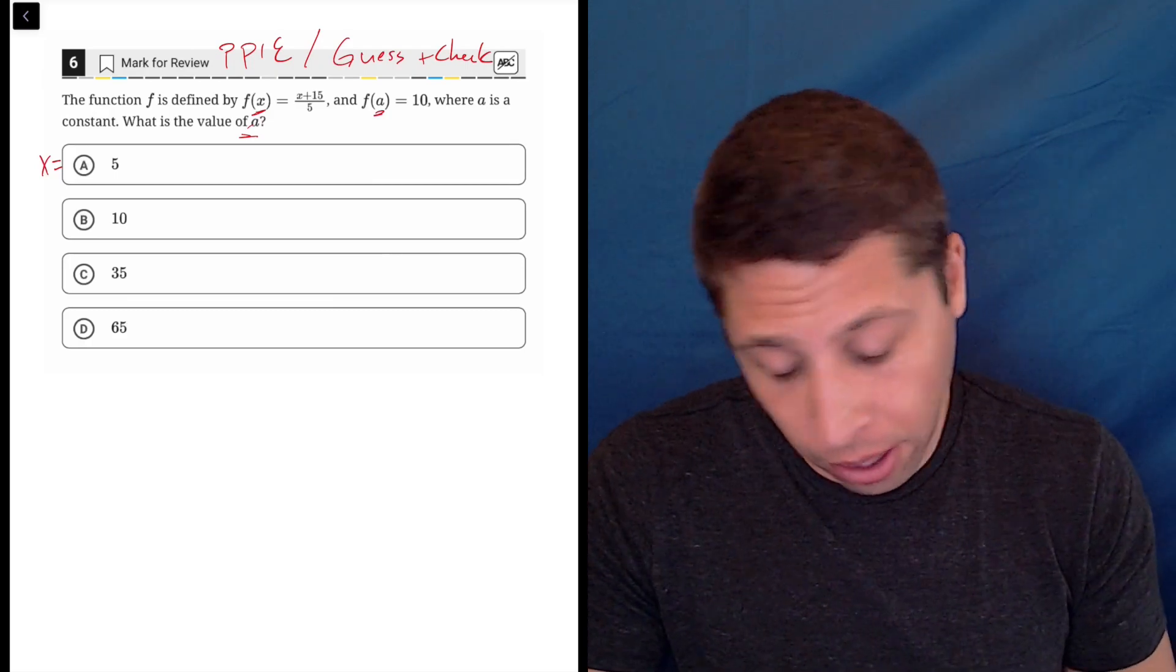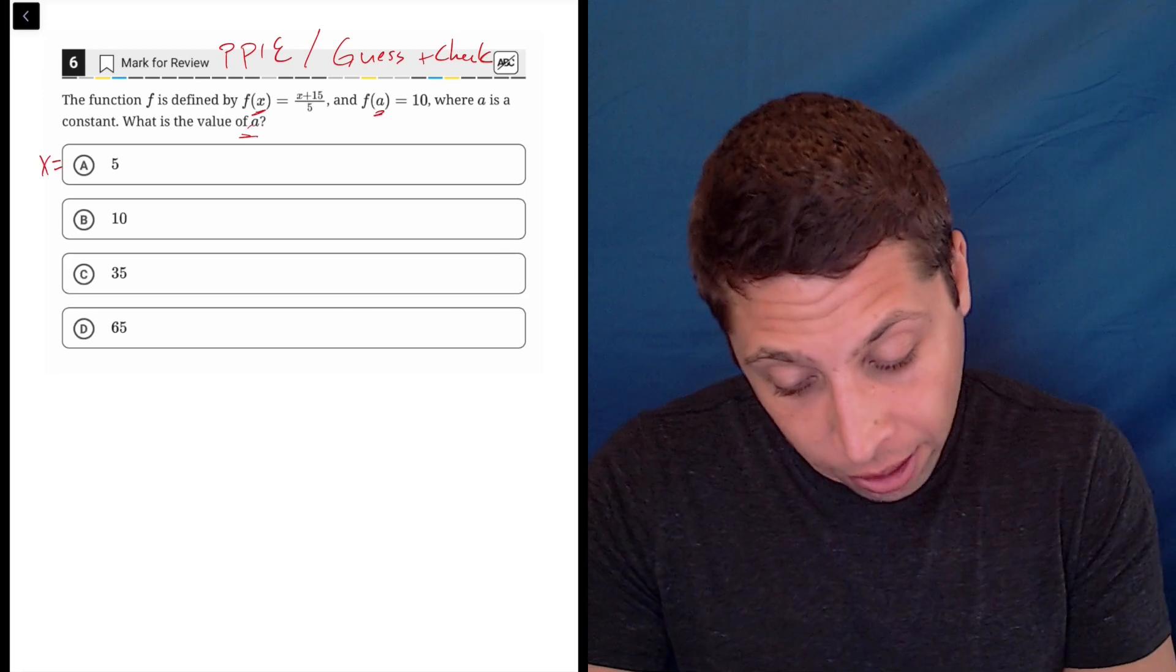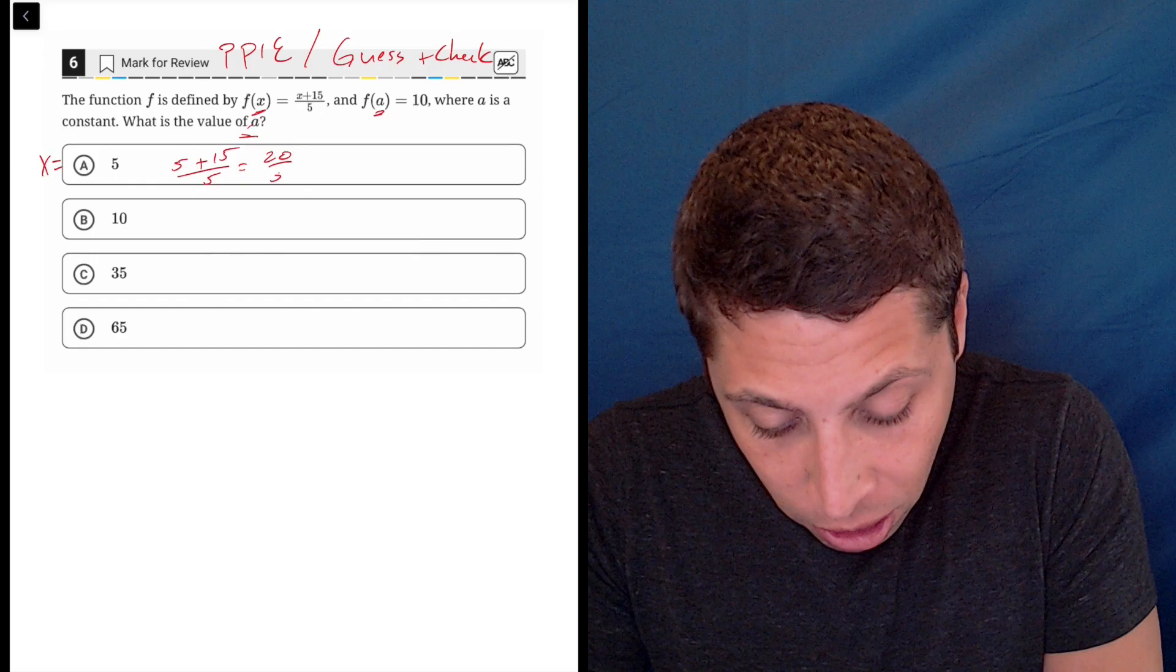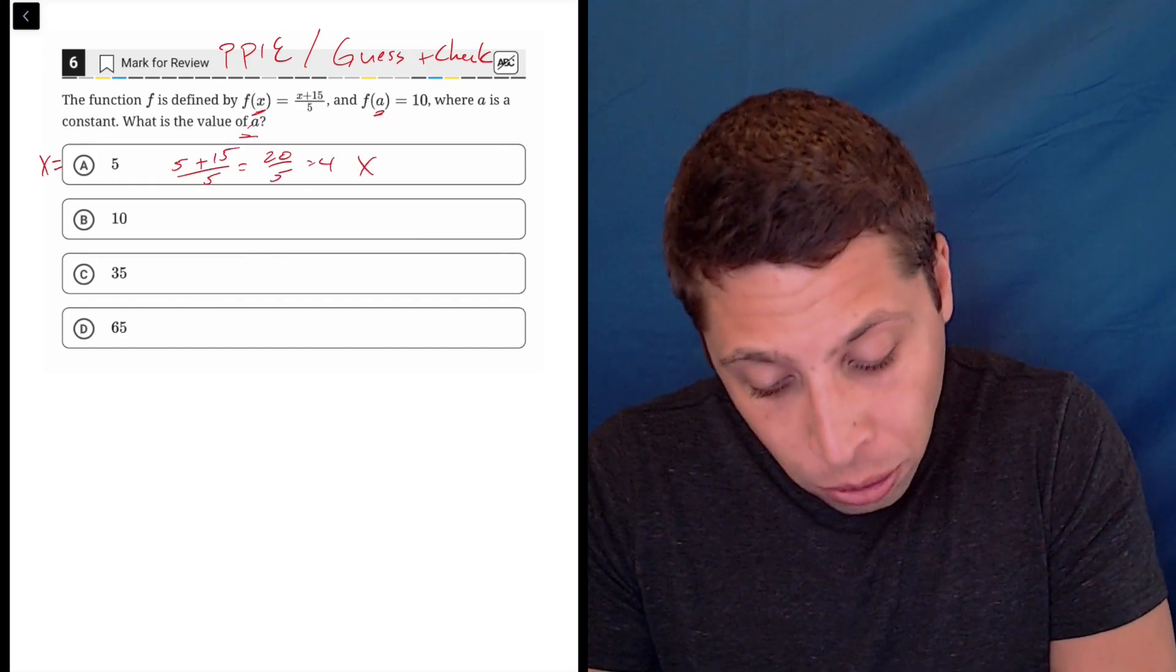You could solve as well, I could show you that at the end, but I would just guess and check. So this would be 5 plus 15 over 5, that's 20 over 5, that's 4, way too low.